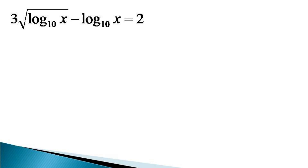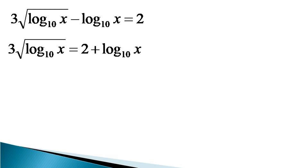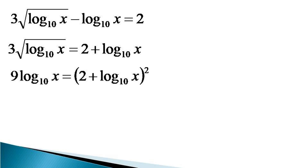We take all the non-radical terms on the right hand side to get 3 under root of log x to the base 10, is equal to 2 plus log of x to the base 10. Now we square both sides to get rid of the square root sign, and the equation becomes 9 log of x to the base 10, is equal to 2 plus log of x to the base 10, whole square.